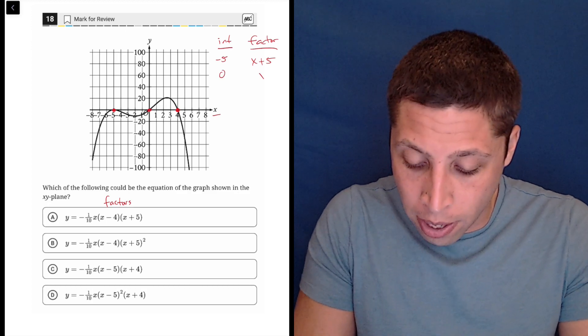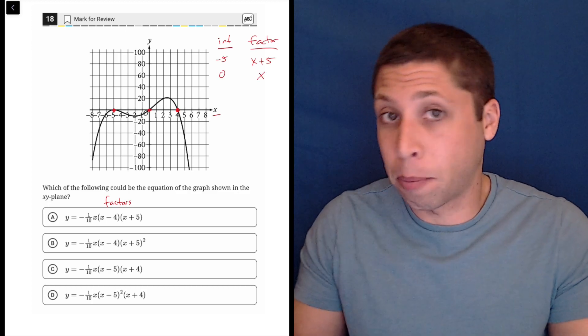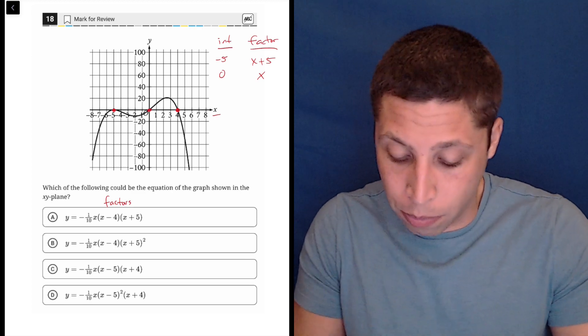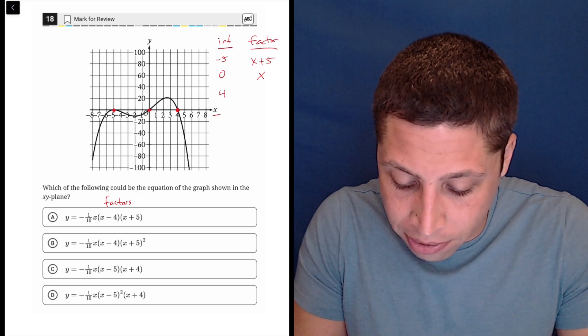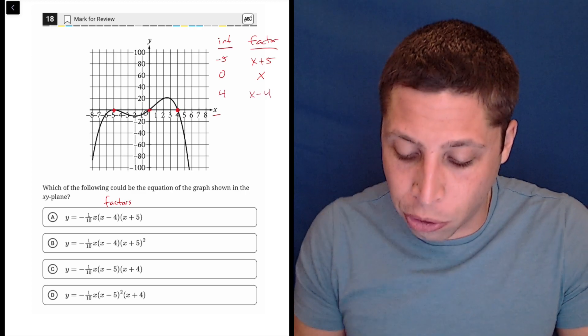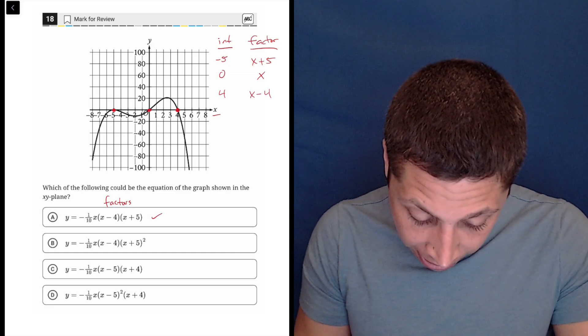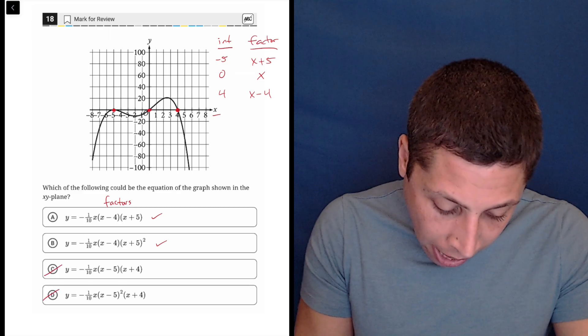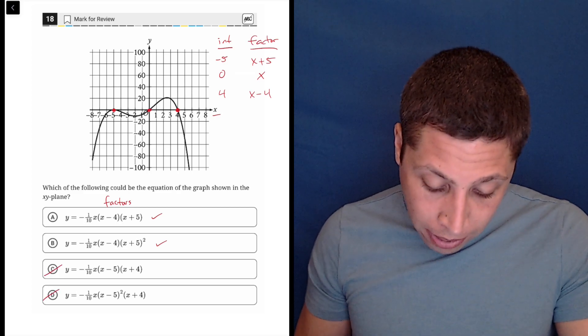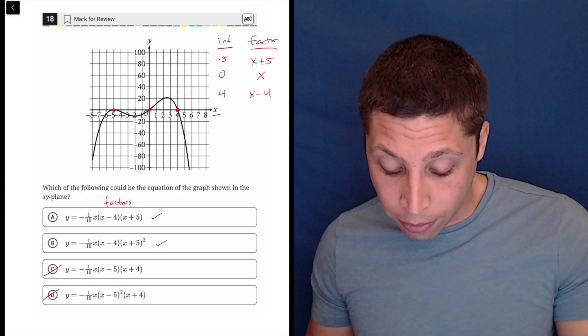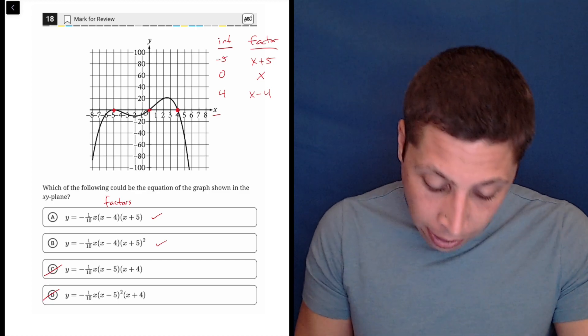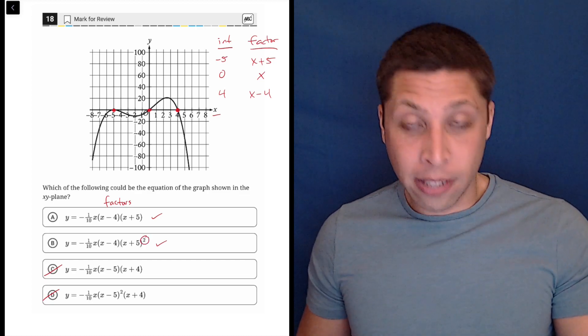If we had zero, the factor there would just be x, because x plus zero is still just x, so that would be the factor there. And then positive four would be x minus four. So start by just looking for that. I see I have an x plus five in a and b, but not in c and d. And also in a and b, I see that I have an x minus four, so that checks out, and I have an x, so that's all good. The only difference is this square.